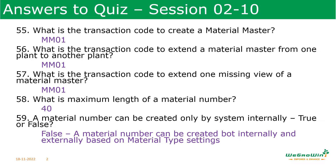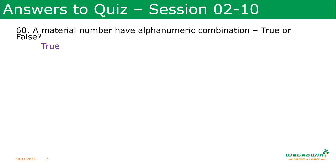The material number can be created only by the system internally — true or false? It is false, because a material number can be created internally by the system or it can be created manually based on the MRP type settings. The material number can have an alphanumeric combination — true or false? True. We can define a material with an alphanumeric combination whether it is internal or external — both options.